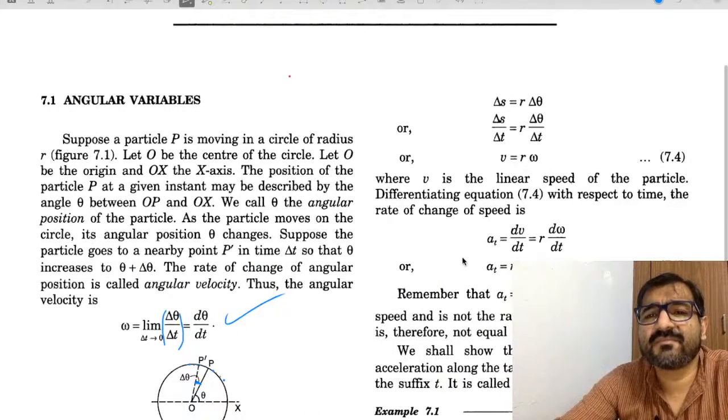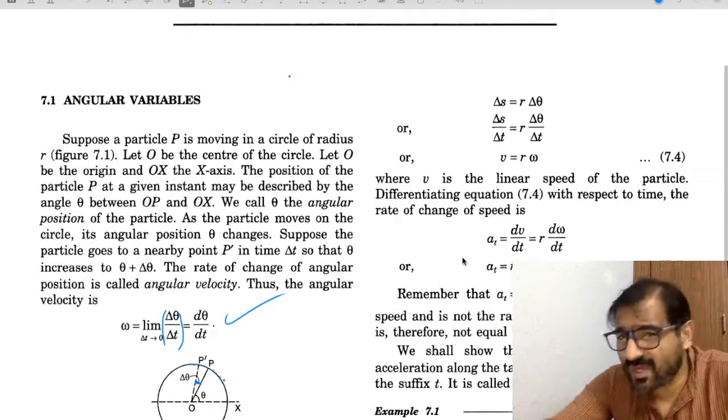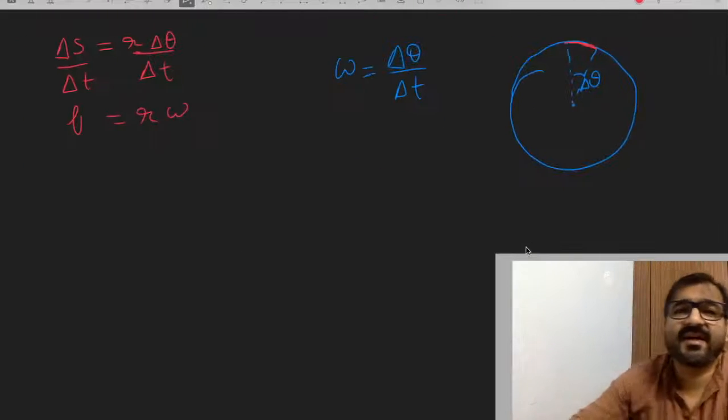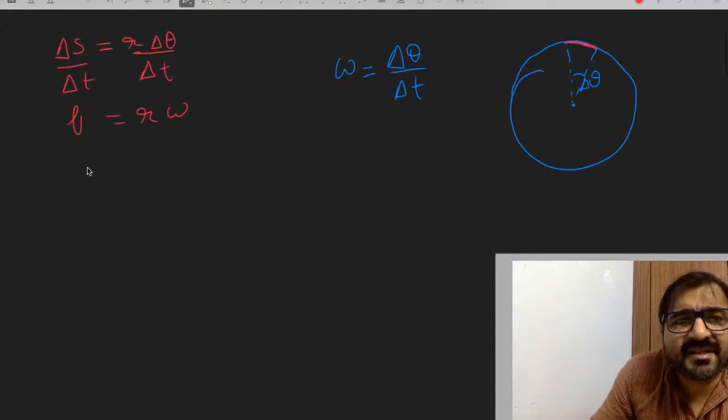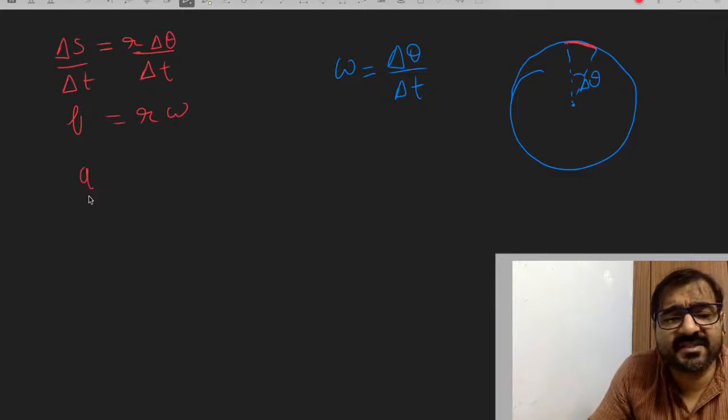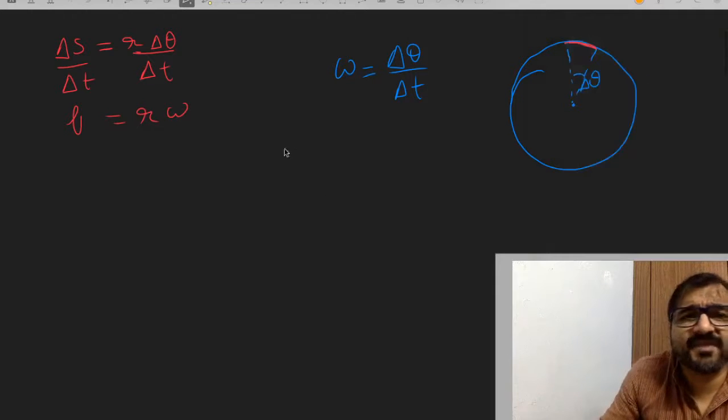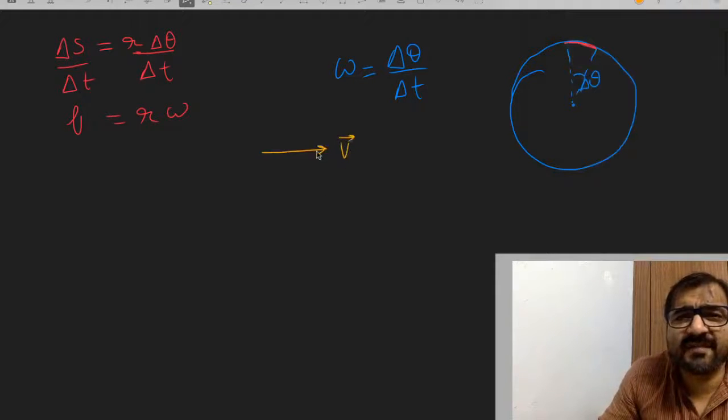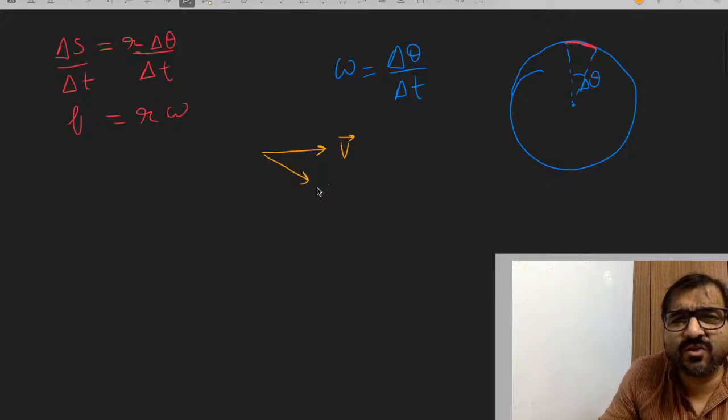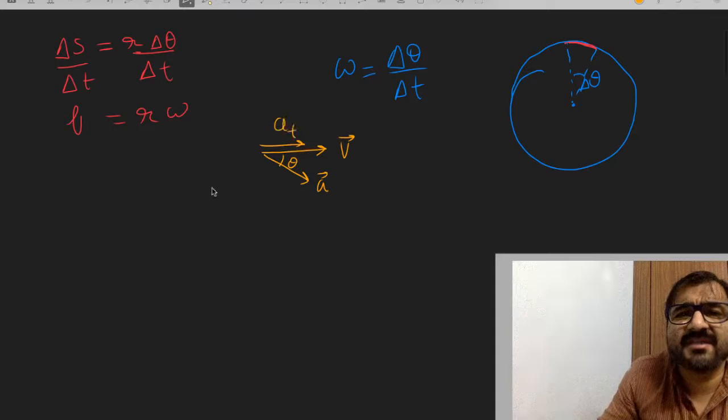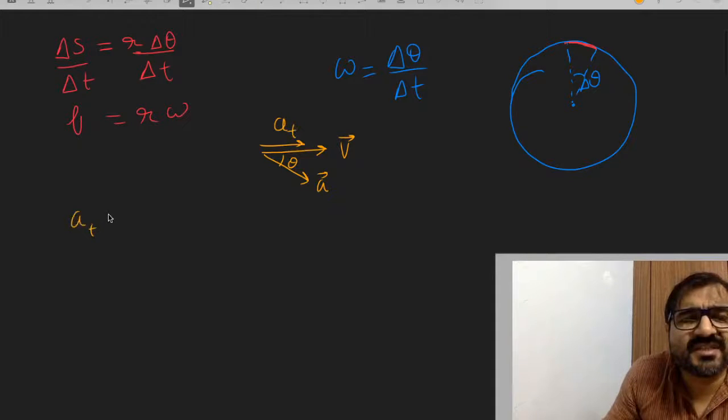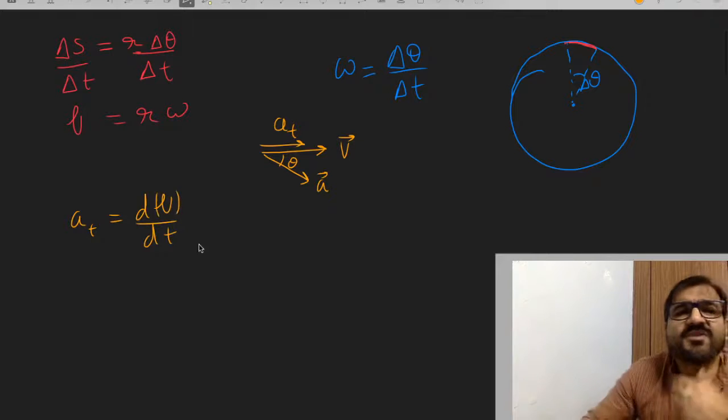Similarly, we're talking about relating tangential acceleration to angular acceleration. Tangential acceleration is that component of acceleration which changes the speed. This is the velocity vector, and the acceleration component in this direction is tangential acceleration. Tangential acceleration is the rate of change of speed.